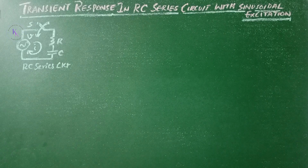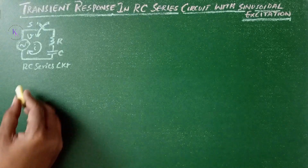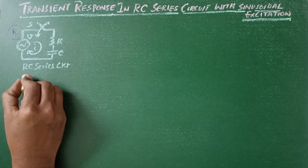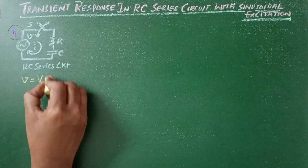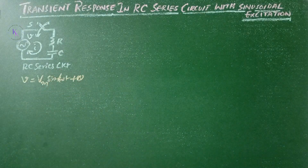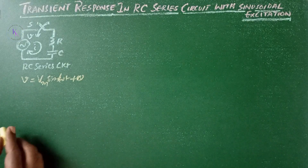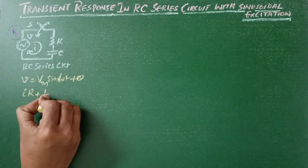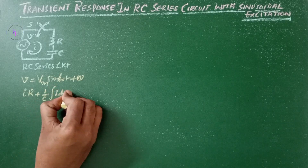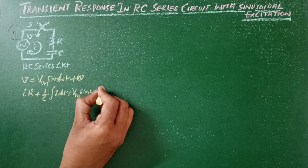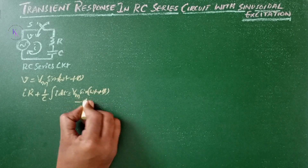Transient response in RC series circuit with sinusoidal excitation. The RC series circuit has voltage V equals Vm sin(ωt + φ), which is a sinusoidal excitation. Applying KVL for this circuit gives IR plus 1/C integral of I dt equals voltage V, that is Vm sin(ωt + φ). That is equation 1.